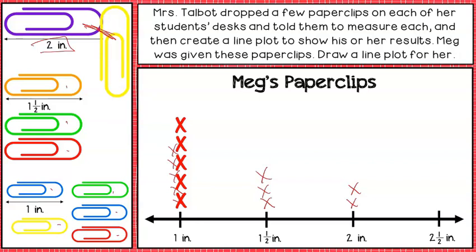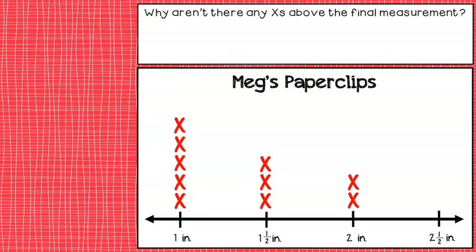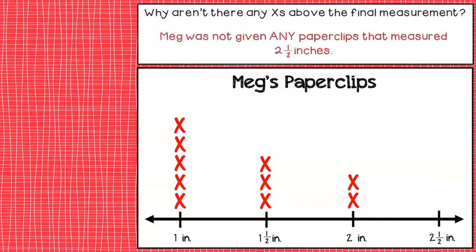I didn't see any two-and-a-half-inch clips. Should I put an X or a zero? If I don't have any, I leave it blank. And looking at the answer — nothing above two and a half. Why? Because Meg was not given any paper clips that measured two and a half inches, so we leave it blank.